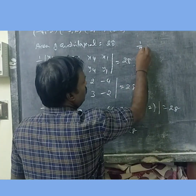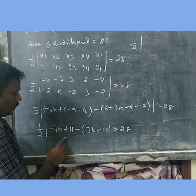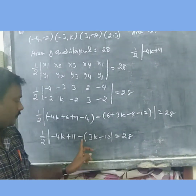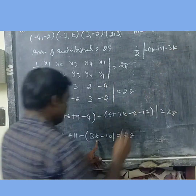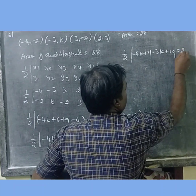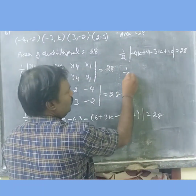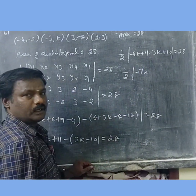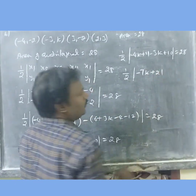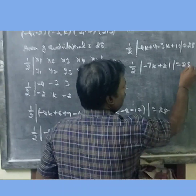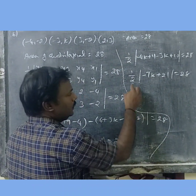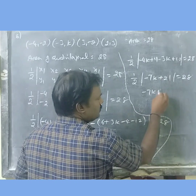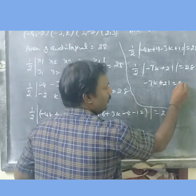Next, 1/2 times: minus 4k plus 11, minus 4k plus 11, minus 4k minus 3k minus 3k plus 10 is equal to 28. Now combining: minus 4k minus 3k equals minus 7k, and 11 plus 10 equals 21, so 1/2 times (minus 7k plus 21) is equal to 28.